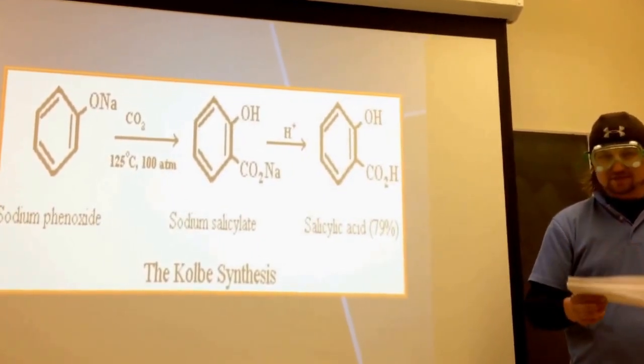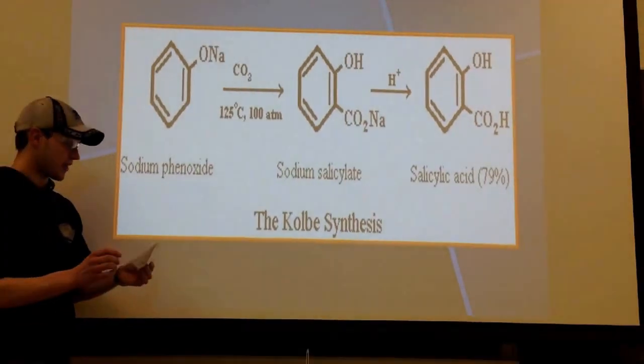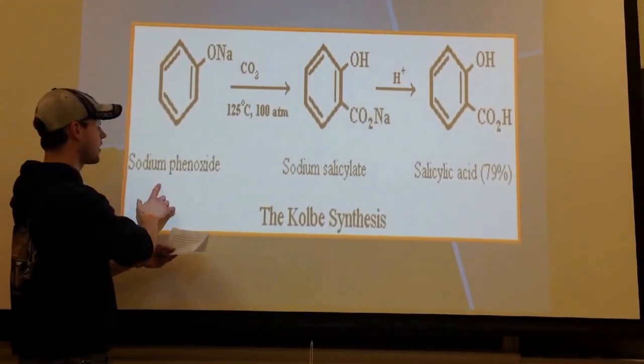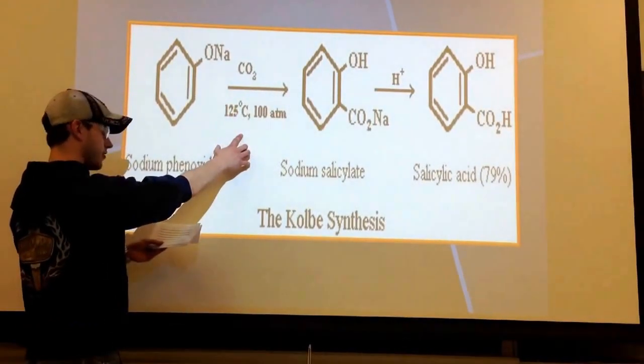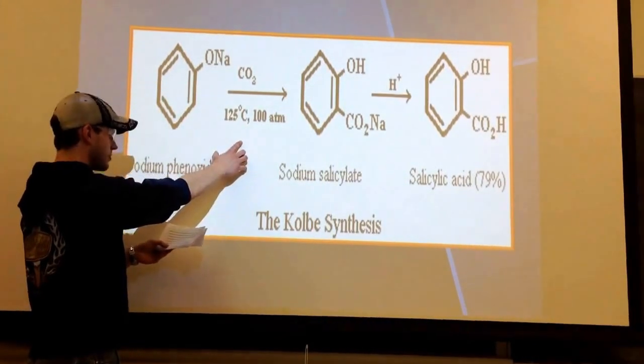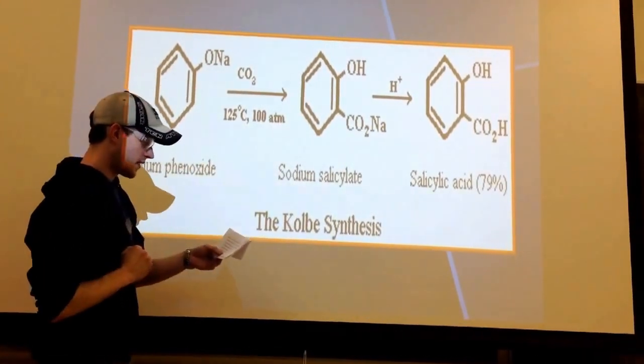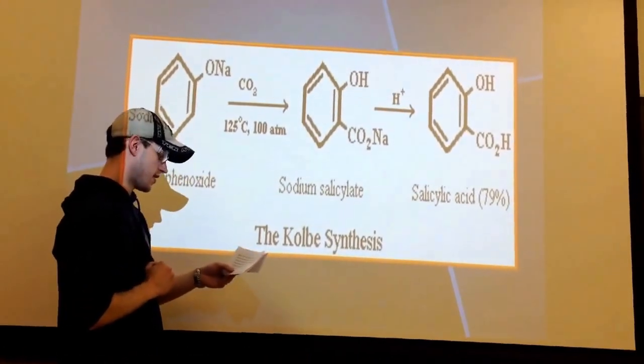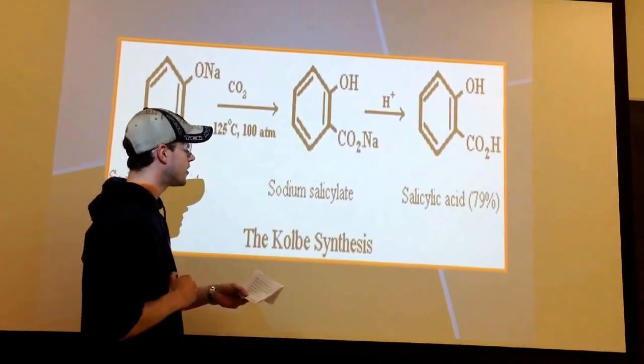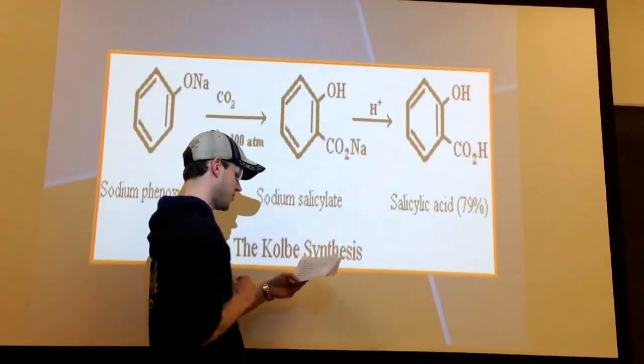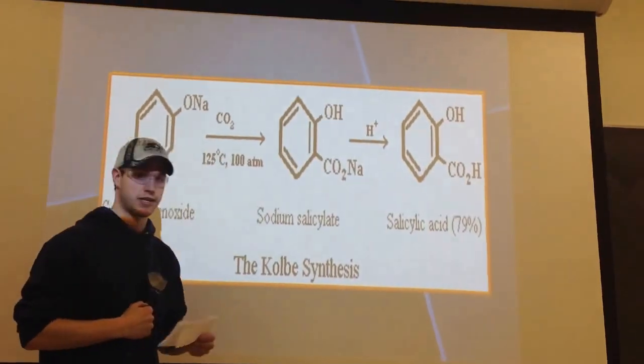In this mechanism, sodium phenoxide is reacted with carbon dioxide at a temperature of 125 degrees Celsius and at an atmospheric pressure of 180 atmospheres. This produces sodium salicylate, and this is then reacted with acid and yields salicylic acid, a yield of about 79 percent.